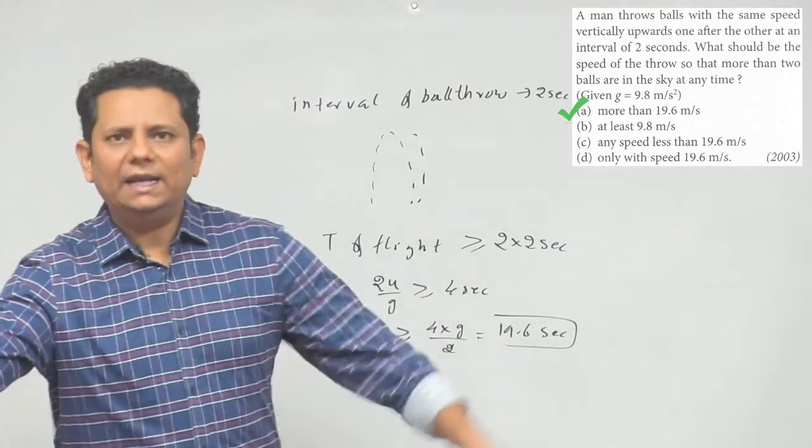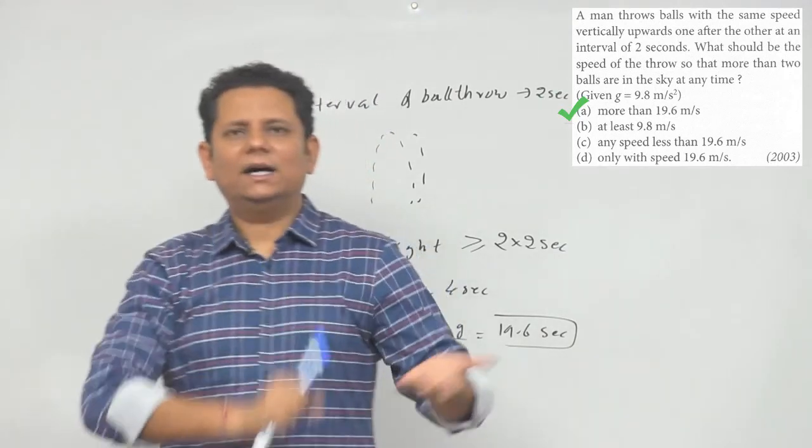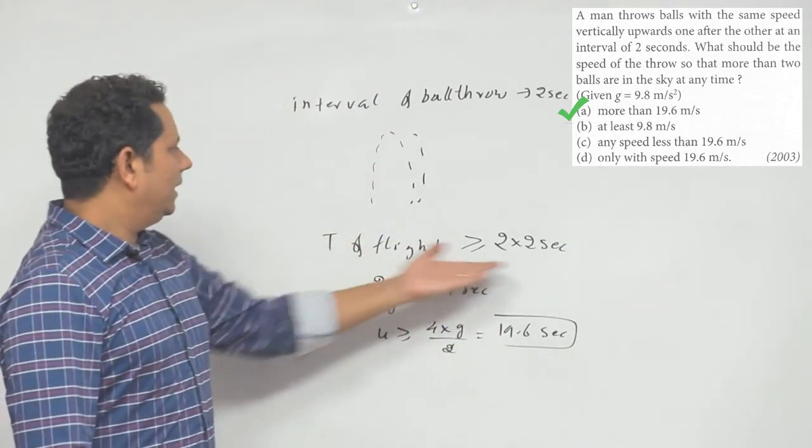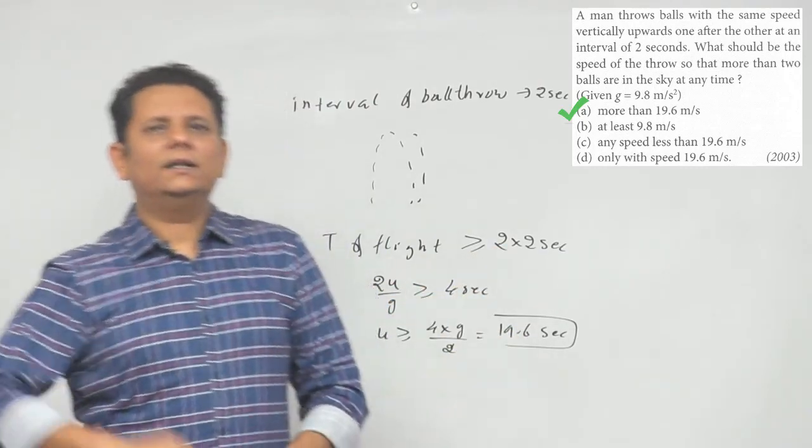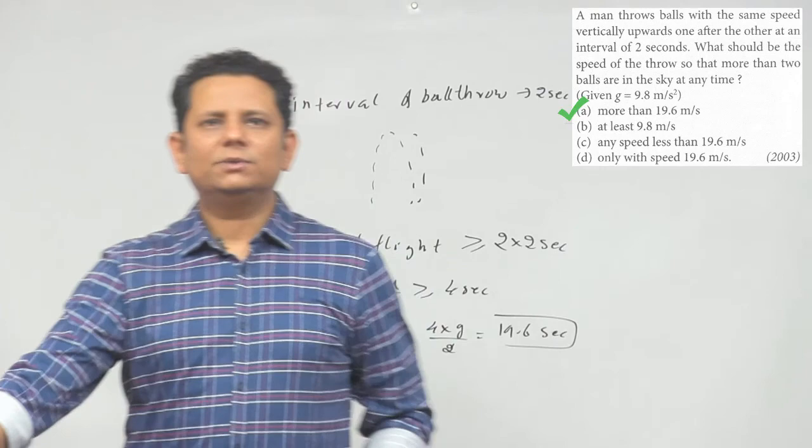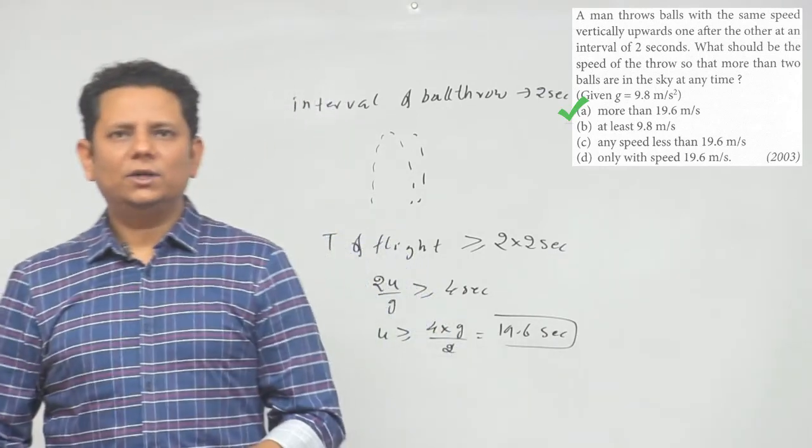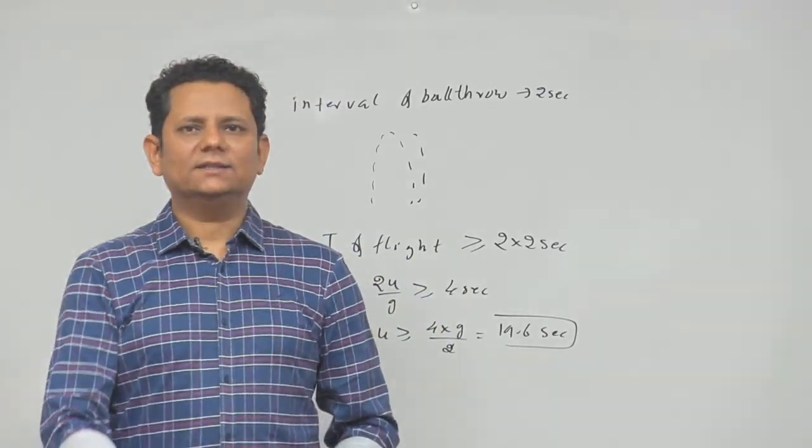This means time of flight should be 4 seconds and velocity should be greater than 19.6. So for this problem we can say that option A - more than 19.6 meter per second - should be the right answer.